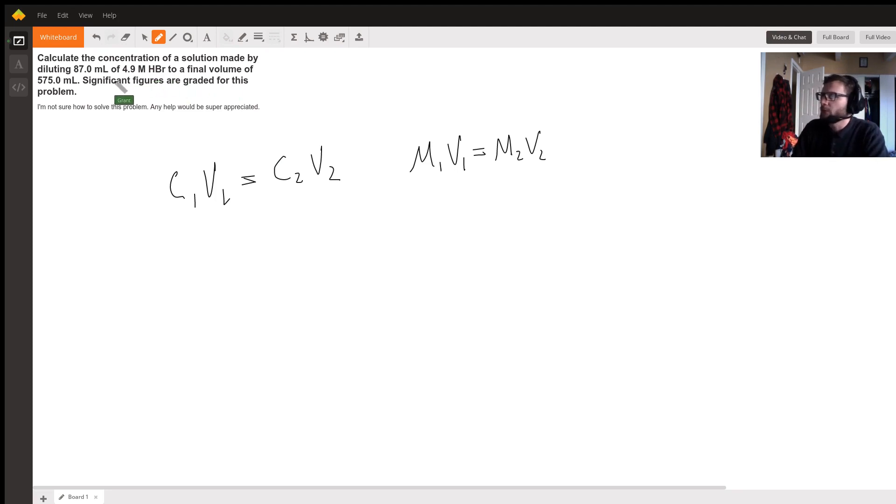So here we can use either. I'm going to leave the units in milliliters. We take the concentration of our first one, 4.9 molar, and multiply it by our volume. We can just leave it in milliliters because our units won't matter. So we've got 87.0 milliliters.